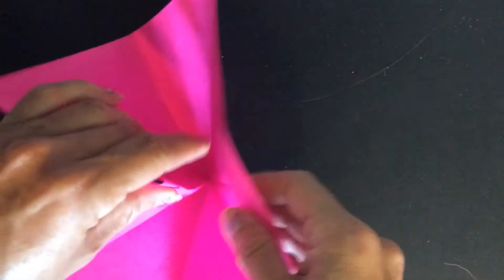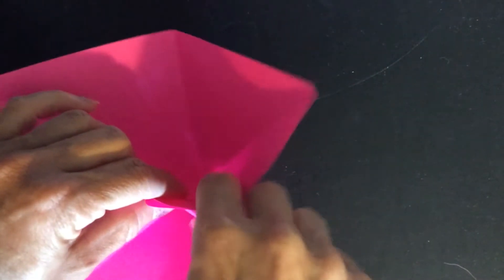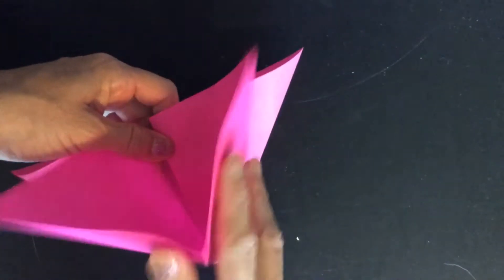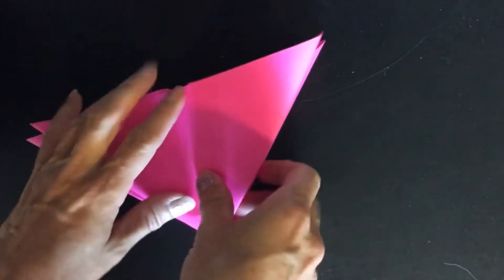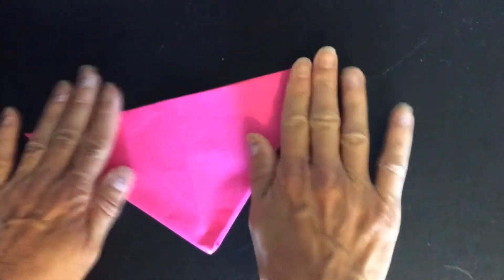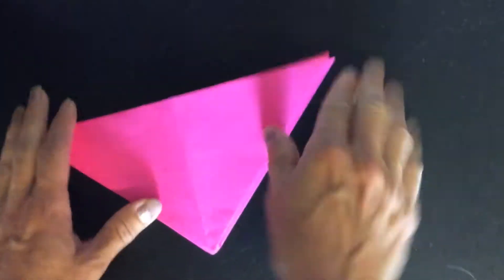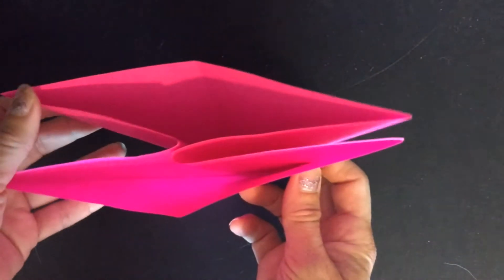Pull these two up like that and you form a triangle. So it should look like this on the inside.